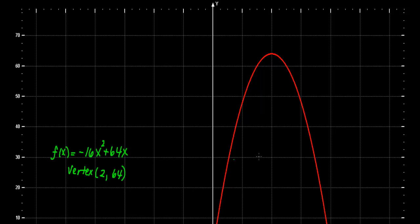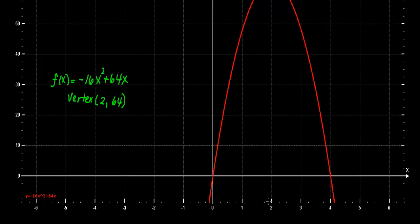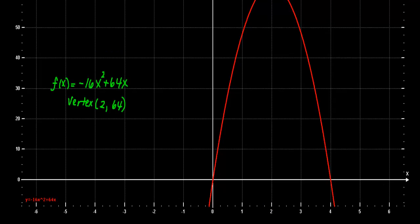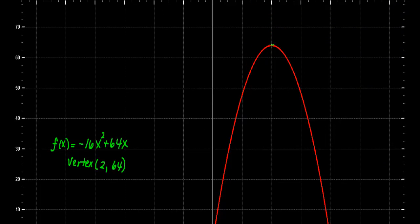And we had found that the vertex was at the point 2, 64. So let's verify that. Let me scroll down a little bit here so that you can see the x-axis values. Here's x equal to 2. Notice that at 2, which is time in seconds, at 2 seconds, look at what happens. At 2 seconds, if I follow this all the way up here, that's where I find the maximum value for my y.